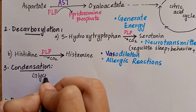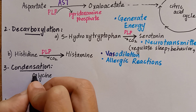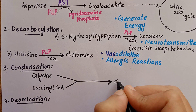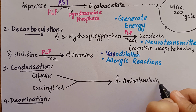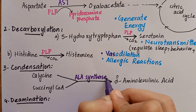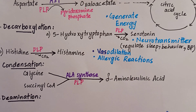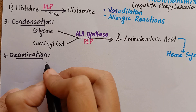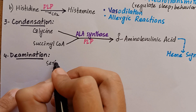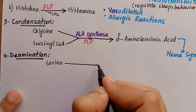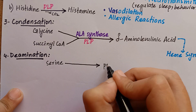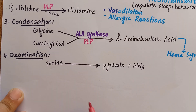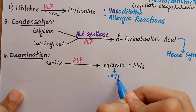In the process of condensation, pyridoxal phosphate is required for condensation of glycine and succinyl-CoA to form delta-aminolevulinic acid, which is the first compound in the porphyrin synthesis pathway leading to heme synthesis. In the process of de-amination, pyridoxal phosphate causes elimination of the amino group from serine, converting it into usable products like pyruvate that can be used as energy.